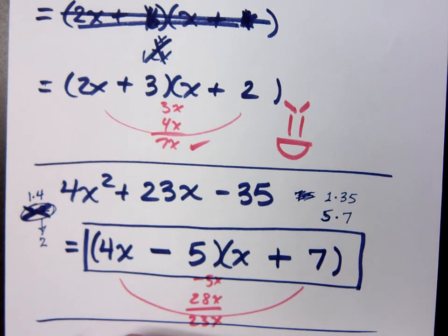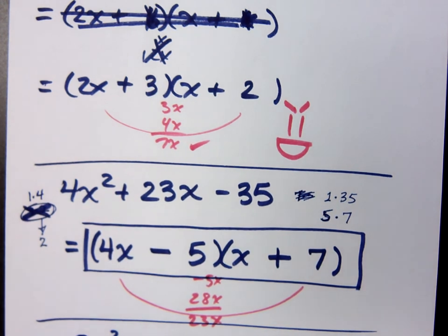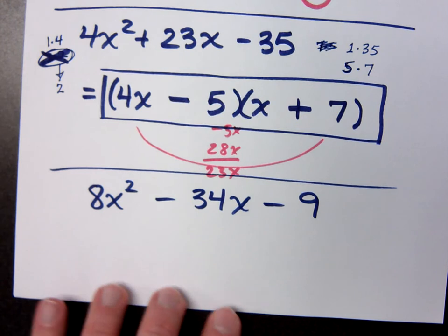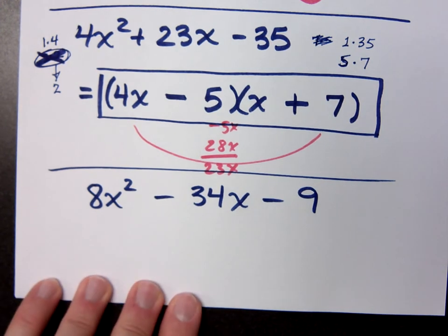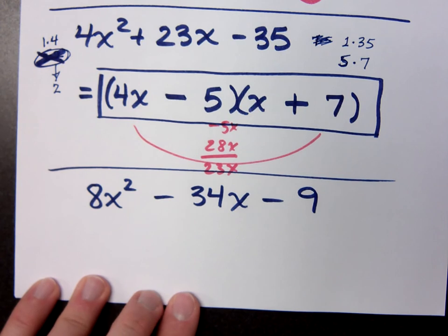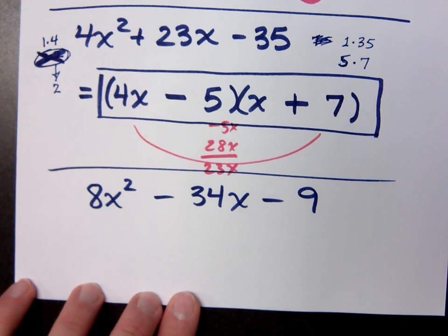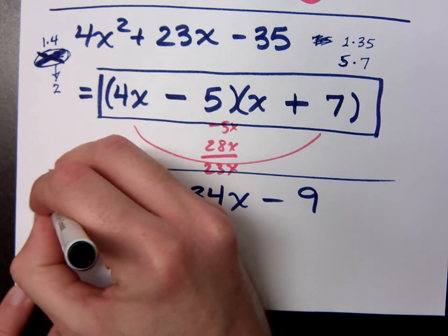If I give you this guy — this is one of my favorites: 8x squared minus 34x minus 9. Is there a common factor for all of these pieces? Nothing other than 1. I want you to list out your factors and use that as a guide. What are the factors for 8? 1 and 8, 2 and 4.